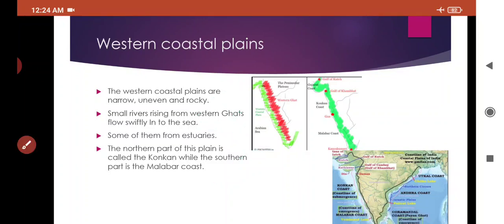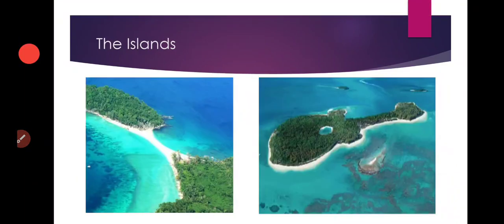Next is islands. Islands are land areas that are surrounded by sea or a water body on all sides — woh chota sa small land area jo har taraf se water se surrounded hai. Here you can see two pictures of islands — these are the pictures of Andaman and Nicobar Islands. It is a guitar-shaped island.